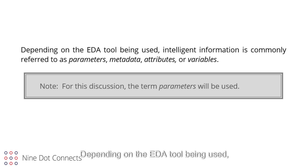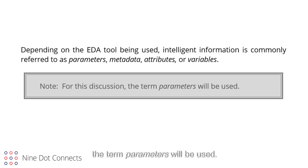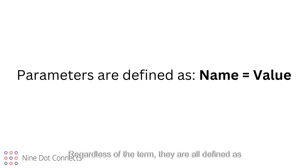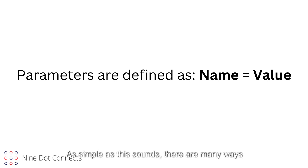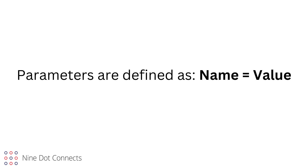Depending on the EDA tool being used, intelligent information is commonly referred to as parameters, metadata, attributes, or variables. Note: for this discussion, the term parameters will be used. Regardless of the term, they are all defined as name equals value. As simple as this sounds, there are many ways this can be entered incorrectly. The two most prevalent issues that are problematic for the designer are not knowing what information to add, and the formatting of information.